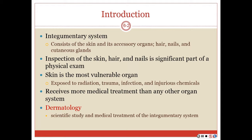We know that skin is the most vulnerable organ in the body because it's exposed to a number of things such as radiation, trauma, infection, and injurious chemicals. It receives more medical treatment than any other organ system. Just to get to the other systems of the body, treatment has to pass through the integumentary system — for example, to reach the cardiovascular system during surgery.